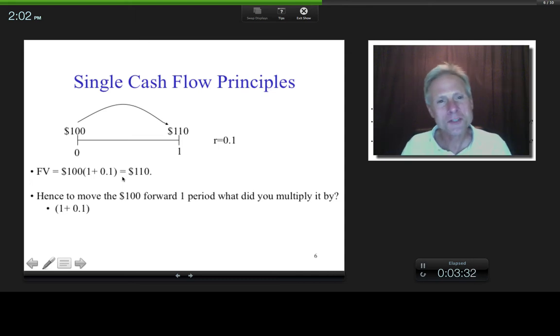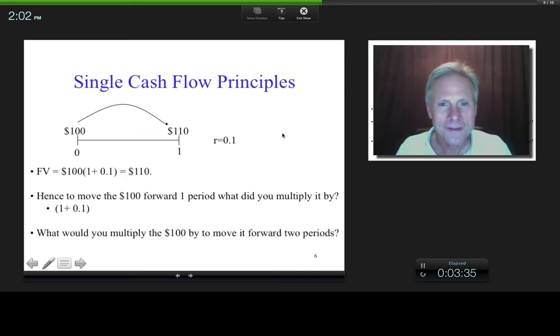Now, suppose I wanted to bring the $110 forward, or the $100 forward another period, or the $110 forward one more period. Okay, so the $100 forward two periods, or the $110 forward one period. So if I begin with $100, I want to bring it forward one period, I multiply it by $1.1. Suppose I wanted to bring it forward another period, what would I multiply it by? Well, presumably $1.1 again, right?